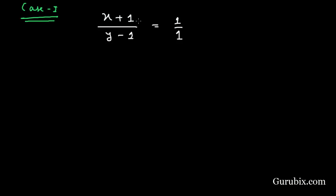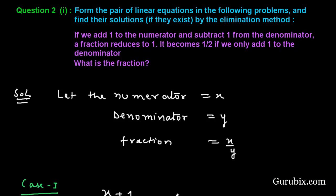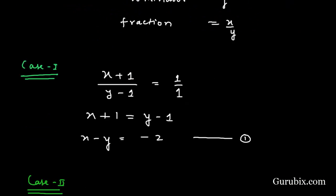We shall write this equation in its standard form. For that, we cross multiply, and it becomes: x plus 1 equals y minus 1, which means x minus y equals minus 2. This is our equation number 1. In case two, we are told it becomes 1 over 2 if we only add 1 to the denominator.